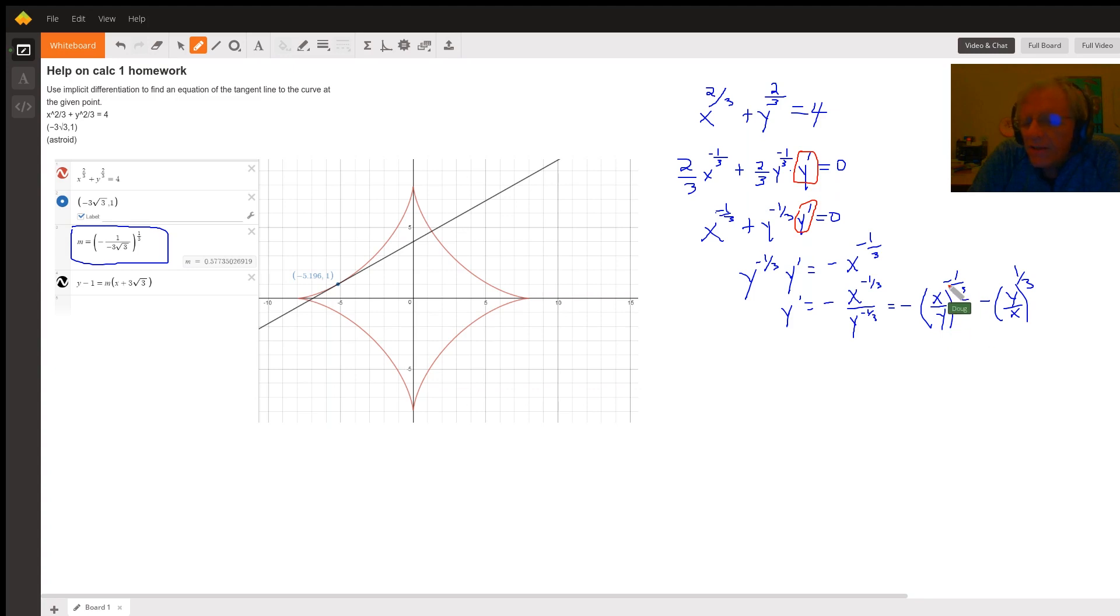And finally, if I want to make the exponent positive, I just take the reciprocal of x over y and write it as y over x. So there's our formula right there.